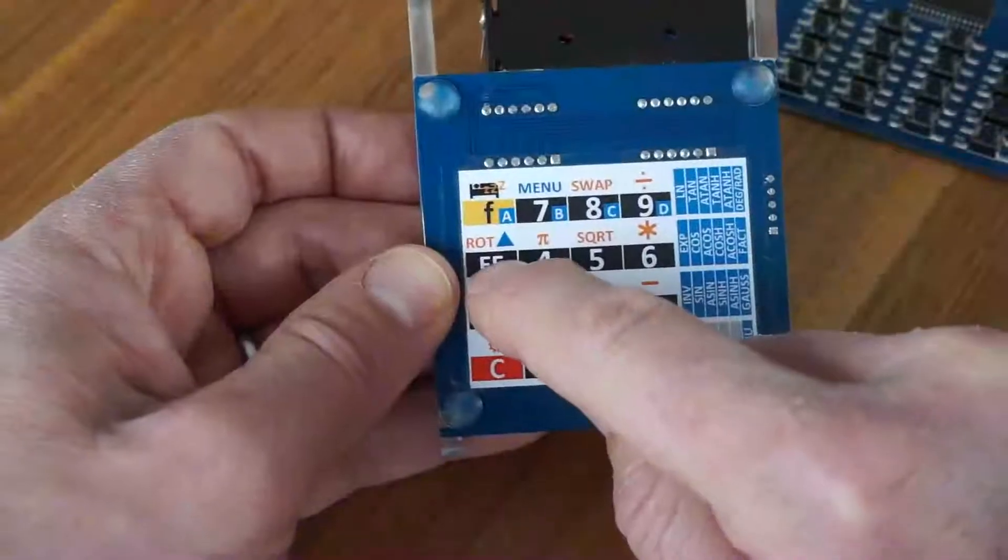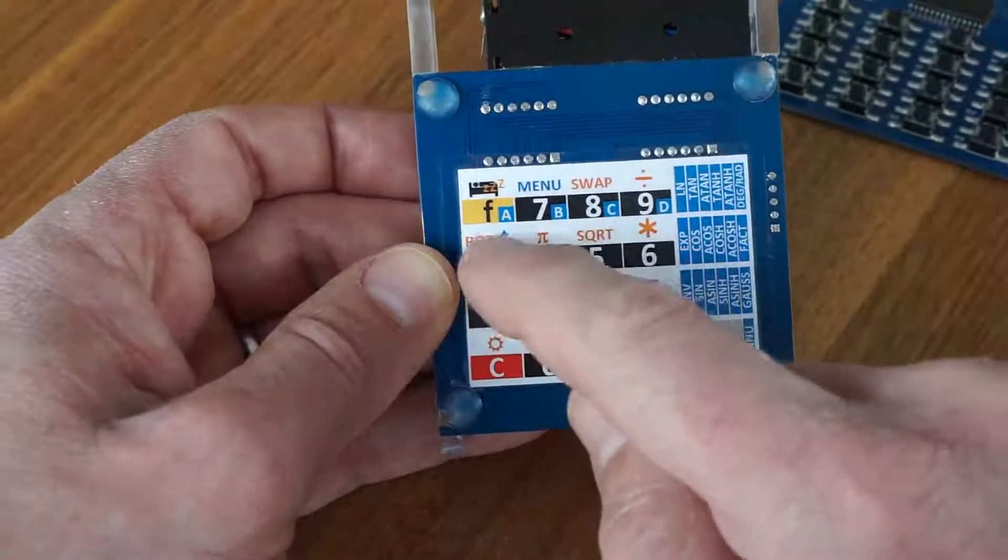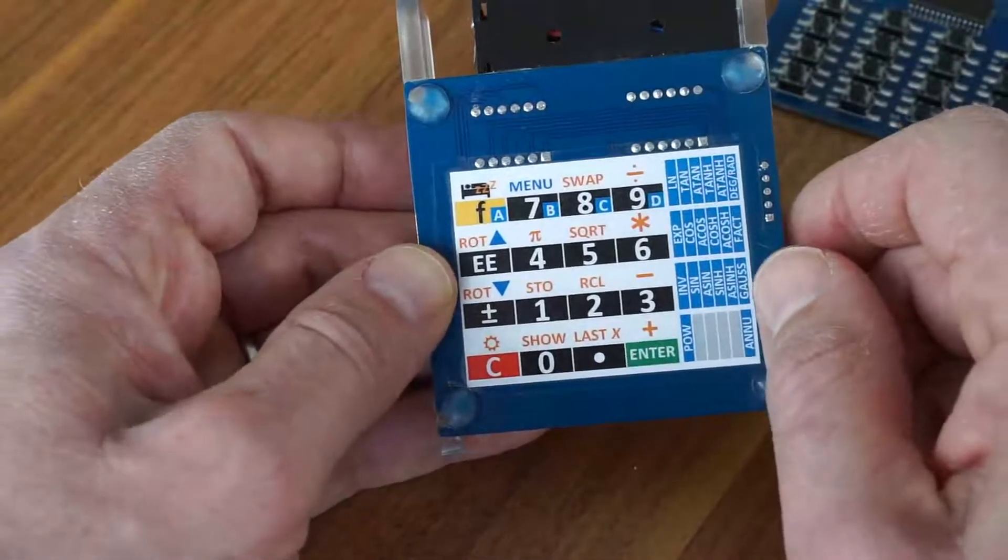There's two special keys, the enter exponent key and the change sign key, which could be two cursor keys too.